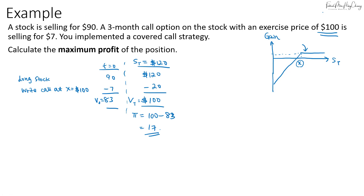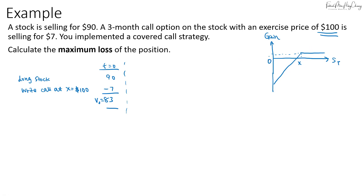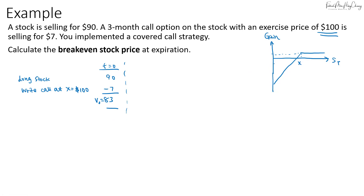To calculate the maximum loss of the covered call, remember that maximum loss occurs when the spot price goes all the way to zero. If the spot price becomes zero at expiration, the call option is below the exercise price and cannot be exercised, so the value of the covered call is zero. The change in value is zero minus $83, meaning we lose $83 — the full initial value invested in the covered call.